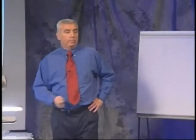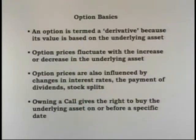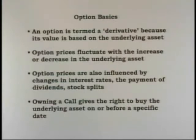An option is also sometimes termed a derivative because its value is based on an underlying asset, and the value of the option is going to fluctuate with the price of the underlying asset. There are several things that can influence option prices: interest rates, dividends, and stock splits.